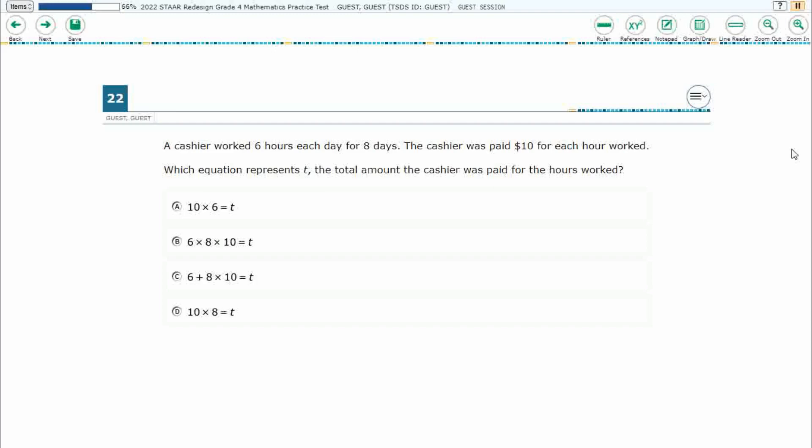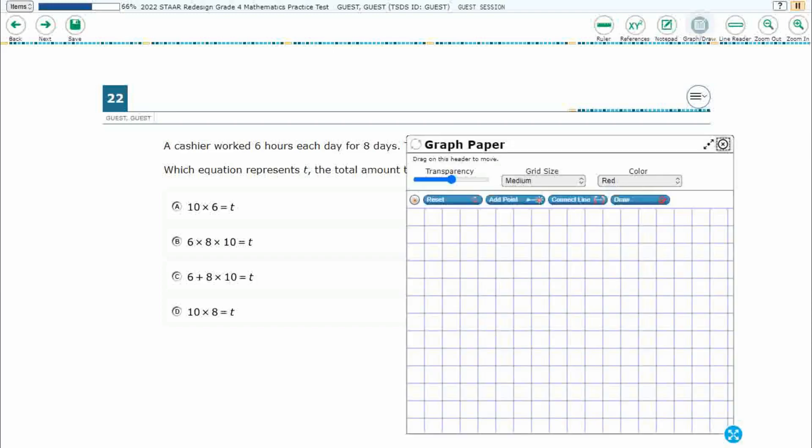So a cashier worked six hours each day for eight days, and the cashier was paid $10 for each hour worked. So what is going to represent t, the total amount that the cashier was paid for the hours worked? All right, so you notice that we've got all of our answers here and it just equals t for total.